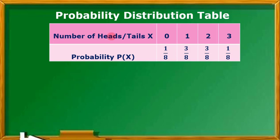We have here the number of heads or tails and let's assign it with a random variable X. X could take values such as 0, 1, 2, and 3. Then we have the probability of X equals 0 is 1 out of the 8 possible outcomes. The probability of X equals 1 is 3 out of 8. The probability of X equals 2 is also 3 out of 8. And the probability that X equals 3 is 1 out of 8.